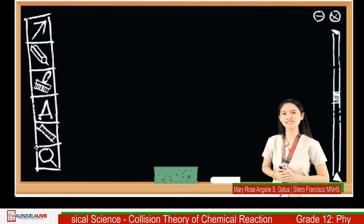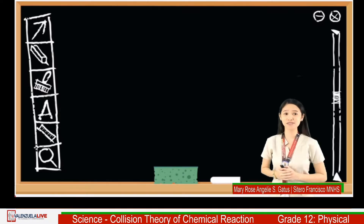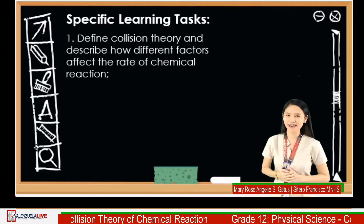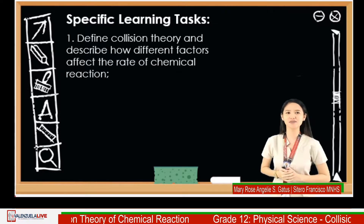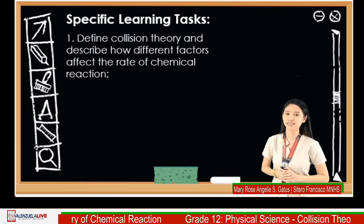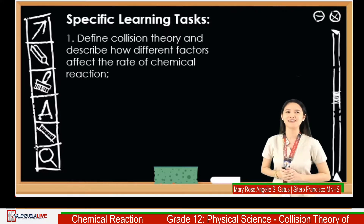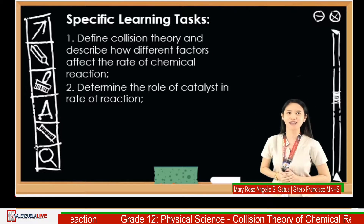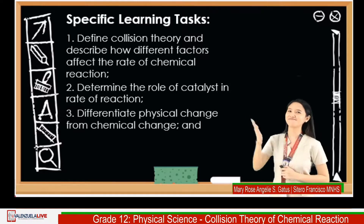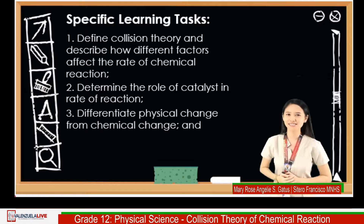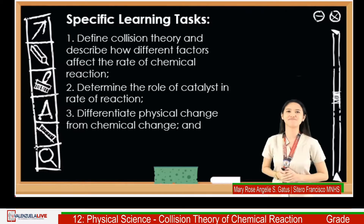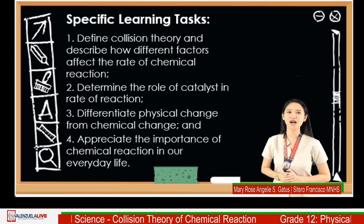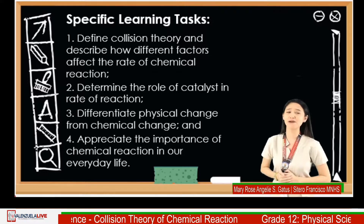For the specific learning tasks, the students should be able to: Number 1, define collision theory and describe how different factors affect the rate of chemical reaction. Number 2, determine the role of catalysts in rate of reaction. Number 3, differentiate physical change from chemical change. Number 4, appreciate the importance of chemical reactions in our everyday life.